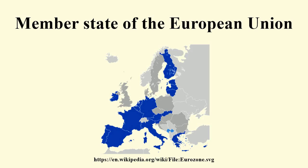Pursuant to the principle of sincere cooperation, the Union and the member states shall, in full mutual respect, assist each other in carrying out tasks which flow from the treaties. The member states shall take any appropriate measure, general or particular, to ensure fulfillment of the obligations arising out of the treaties or resulting from the acts of the institutions of the Union. The member states shall facilitate the achievement of the Union's tasks and refrain from any measure which could jeopardize the attainment of the Union's objectives. — Article 4 of the Treaty on European Union.